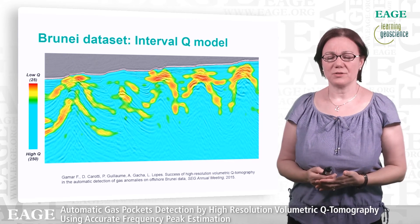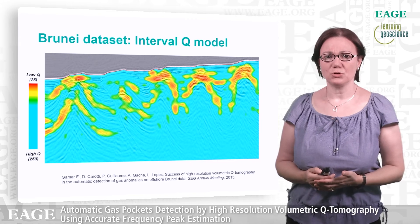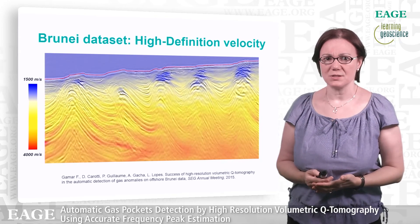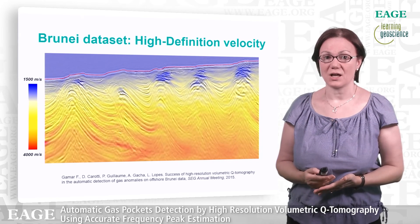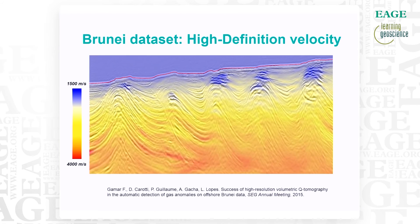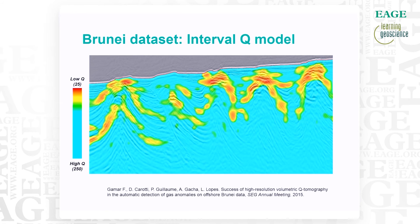Comparing this interval Q model to the high-definition velocity model, we see that the location of the gas pockets revealed by the Q tomography matches quite well the high-resolution velocity model showing low velocity anomalies in those gas areas.